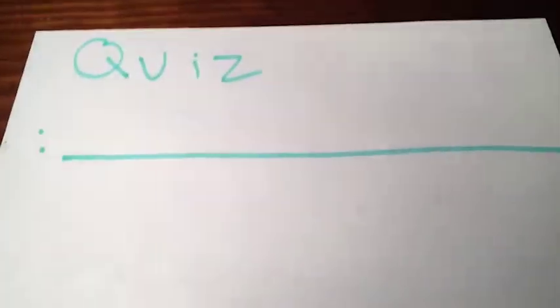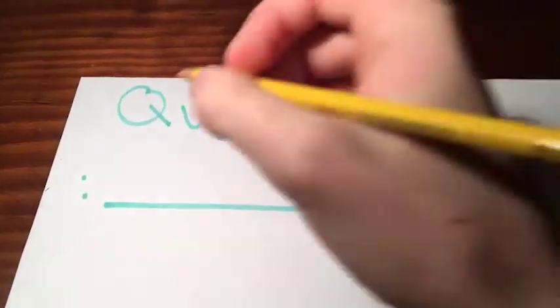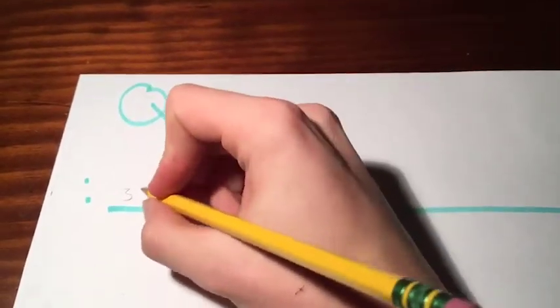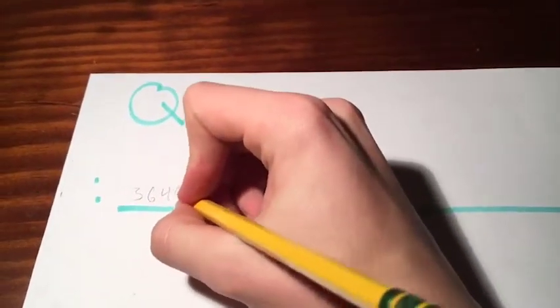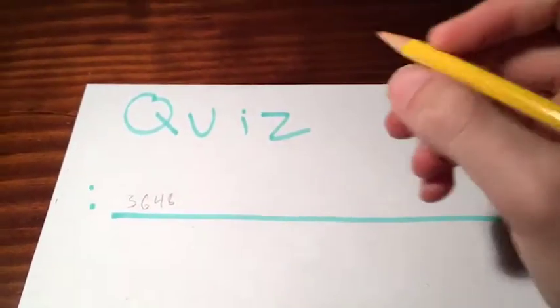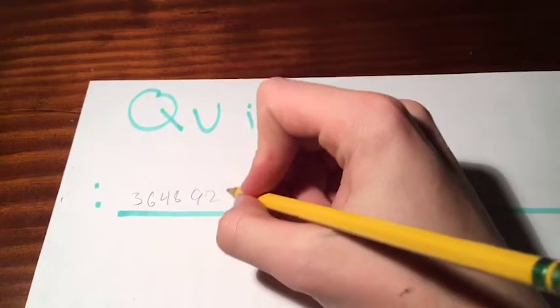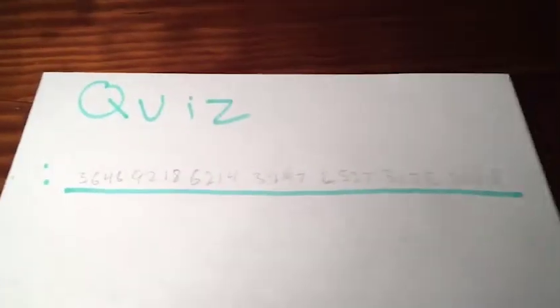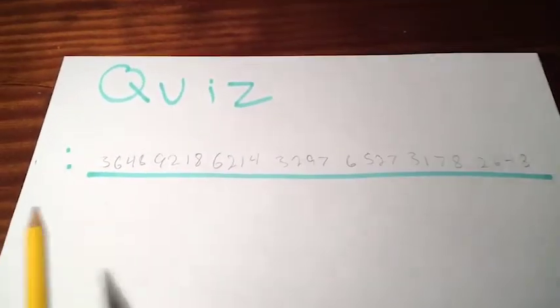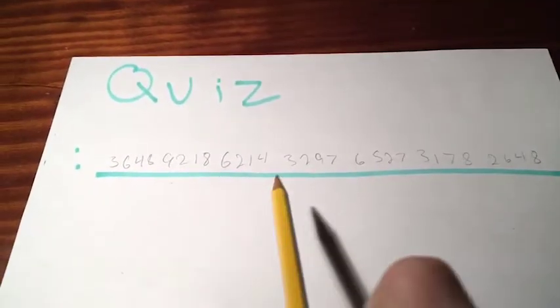The first four: three, six, four, eight. The second four was nine, two, one, eight. By chunking them in groups of four, it's easy to remember.